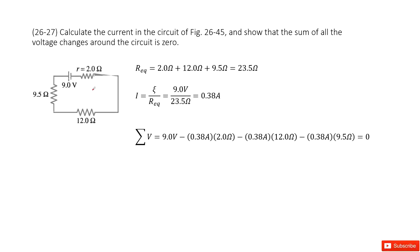So first one we can get the equivalent resistance for this circuit. Use the internal resistance plus the external resistance. The equivalent resistance for the circuit is 23.5 ohms. Then we can apply Ohm's law, use the emf divided by equivalent resistance for the circuit. Then we get the current there, 0.38 amps.